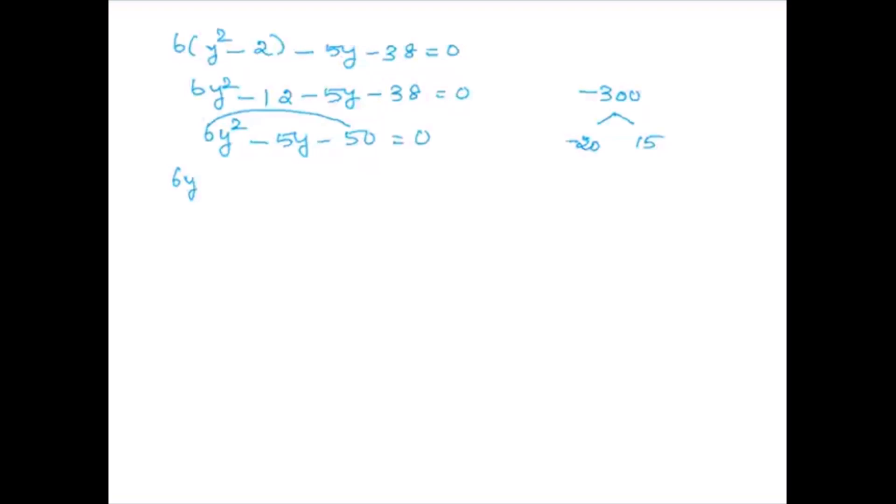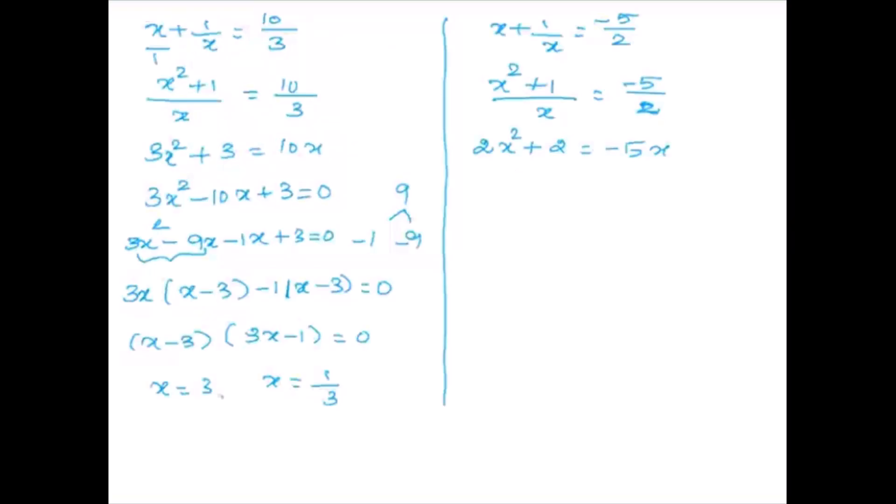Case 2: x + 1/x = minus 5/2. Cross multiplying: 2x² + 2 = minus 5x, giving 2x² + 5x + 2 = 0. Factoring: 2x(x + 2) + 1(x + 2) = 0. Therefore (x + 2)(2x + 1) = 0, giving x = minus 2 or x = minus 1/2.